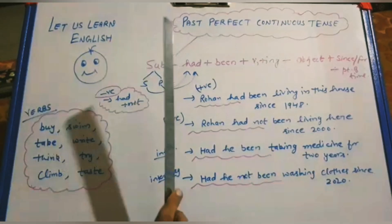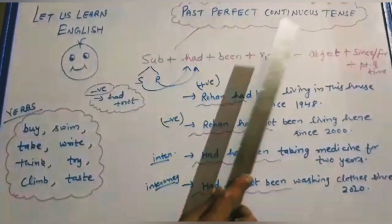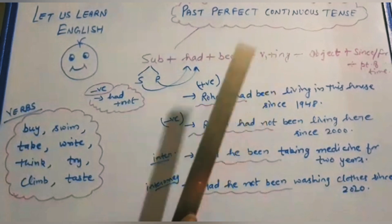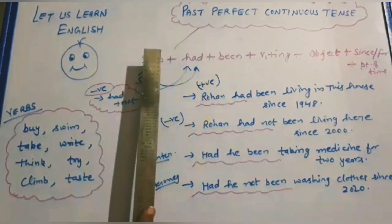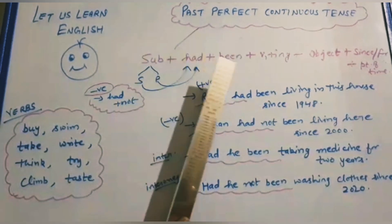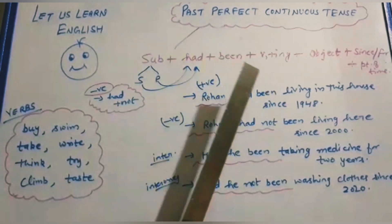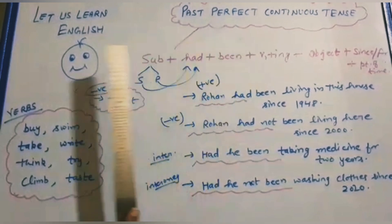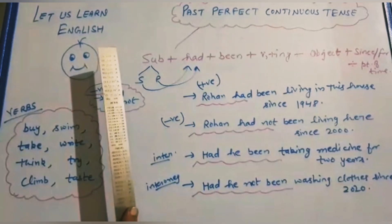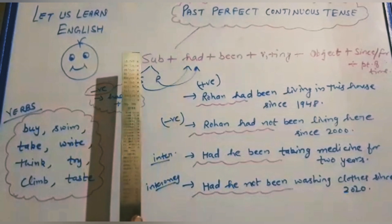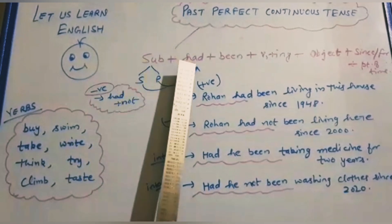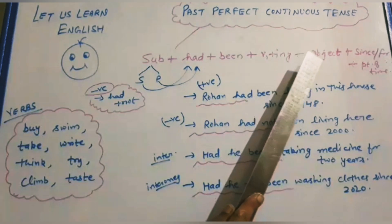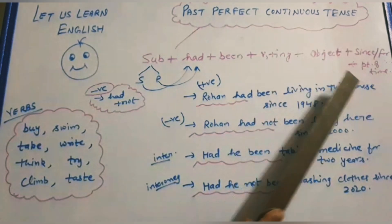Now let us take past perfect continuous tense. Past perfect continuous tense means that some work was completed in the past and was also continuing in the past — the work was in progress. The rule is: subject plus had plus been plus V1+ing plus object. Since and for are used for the point of time.